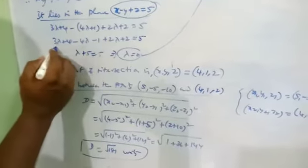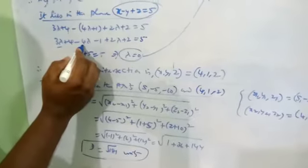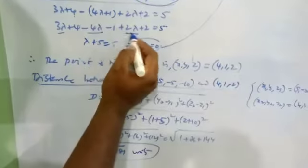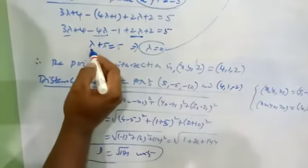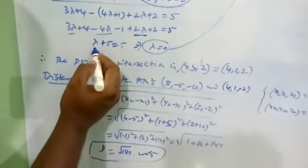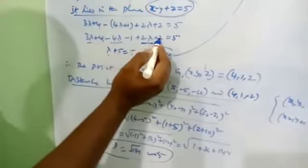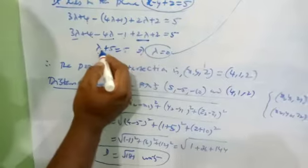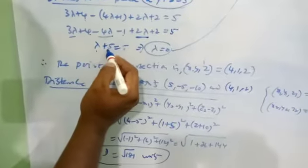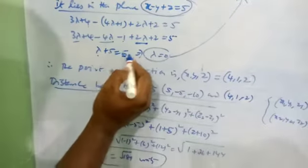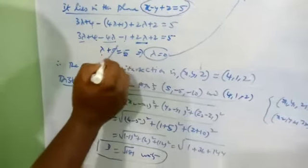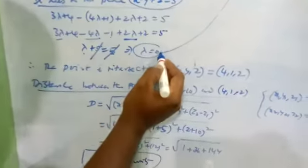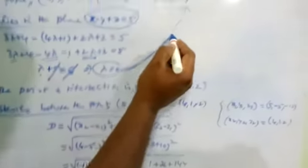Now substituting into the plane x minus y plus z equals 5: (3λ+4) minus (4λ+1) plus (2λ+2) equals 5. Simplifying: 3λ minus 4λ plus 2λ plus 4 minus 1 plus 2 equals 5. So lambda plus 5 equals 5, therefore lambda equals 0.